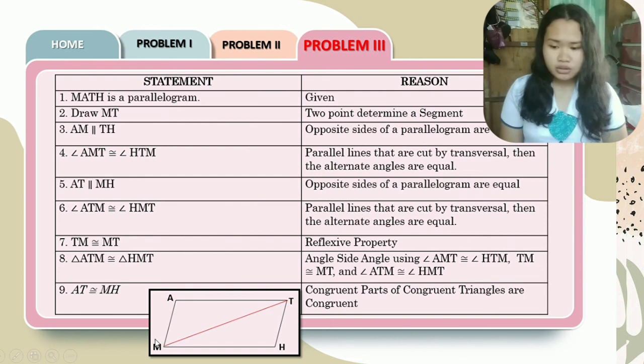Therefore, angle ATM is congruent to angle HMT. Since parallel lines that are cut by a transversal, then the alternate angles are equal. Then TM is congruent to MT through reflexive property. Therefore, triangle ATM and triangle HMT are congruent by the angle-side-angle congruence. AT is congruent to MH since congruent parts of congruent triangles are congruent.